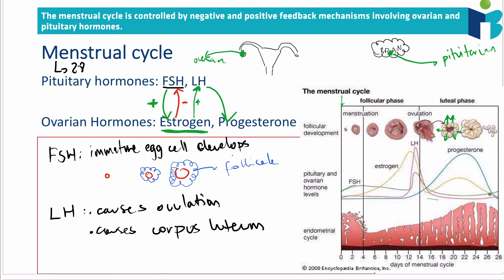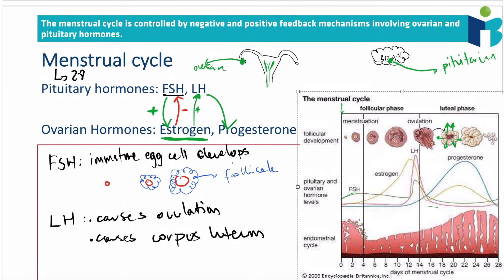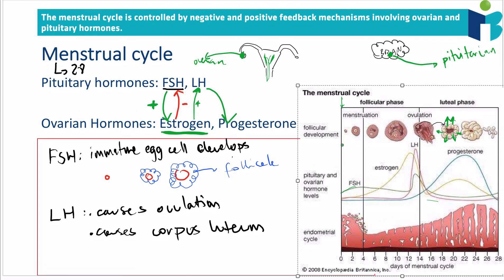As progesterone falls — when the corpus luteum breaks down — maintenance of the uterine lining stops, which is when menstruation occurs. Menstruation is the shedding of the inner lining of the uterus. Progesterone also performs negative feedback on FSH, blocking FSH from being released by the pituitary, because you don't want a new egg developing while waiting to see if the current one will implant. As progesterone levels fall, inhibition of FSH is lost and FSH levels rise again.